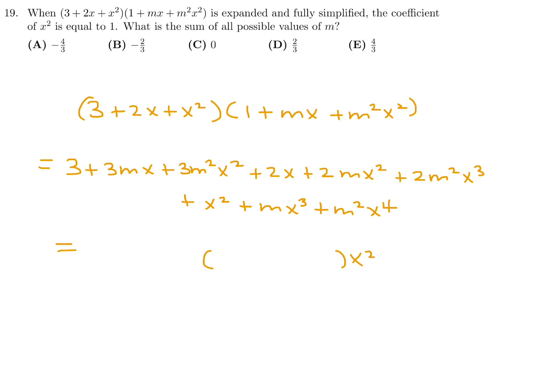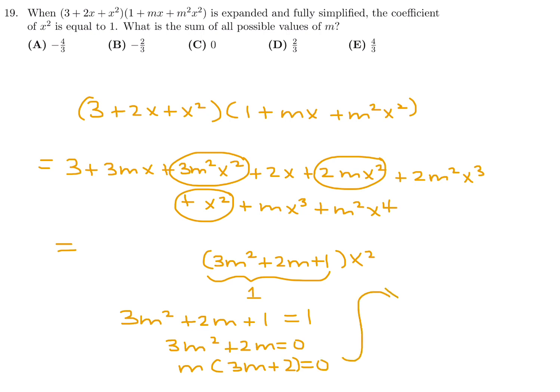So we got 3 plus 3mx plus 3m squared x squared plus 2x plus 2mx squared plus 2m squared x cubed plus x squared plus mx cubed. All I need to care about is the coefficient in front of x squared. From here, I get a 3m squared. From here, I get a 2m. And any others? From here, I just get a 1. That's the only thing I need to worry about. And they're telling me that coefficient is equal to 1. So, 3m squared plus 2m plus 1 is equal to 1. So that means 3m squared plus 2m is equal to 0. Factor out the m. And I get 3m plus 2 is equal to 0.